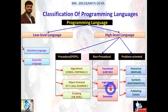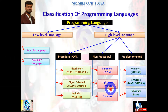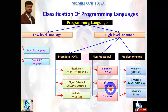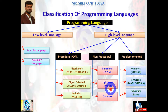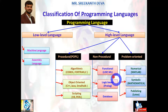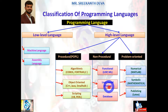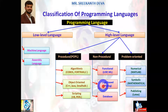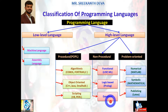Logic-based programming languages are based on formal logic. A program written in a logic programming language is a set of sentences in logical form expressing facts and rules about some problem domain. Logic programming languages are important because of their declarative nature, potential power, flexibility, and suitability for execution on highly parallel architectures. Major logic programming language families include Prolog, answer set programming (ASP), and Datalog.